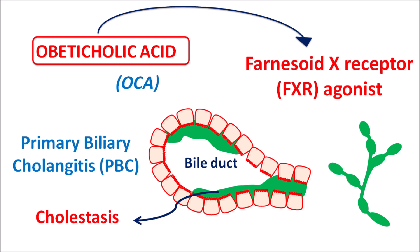OCA can be combined with another bile acid supplement, UDCA — ursodeoxycholic acid. UDCA can also be used for the management of PBC, so both drugs can be combined. Alternatively, obeticholic acid can be given to patients who are not tolerant of UDCA. Since OCA can produce severe hepatic decompensation, it should be restricted to those patients not tolerant of UDCA, or combined with UDCA to increase efficacy.